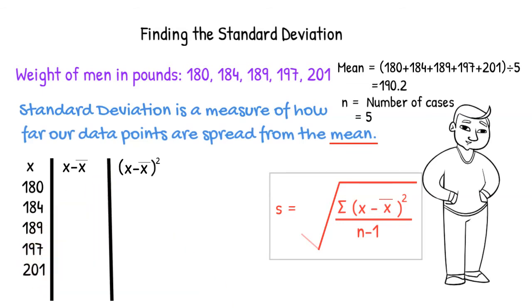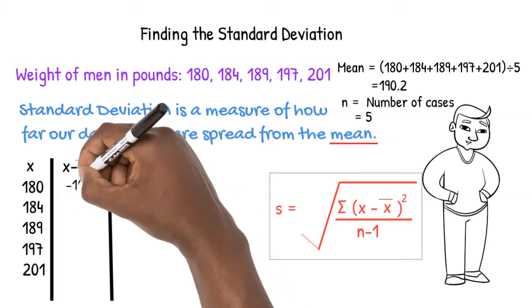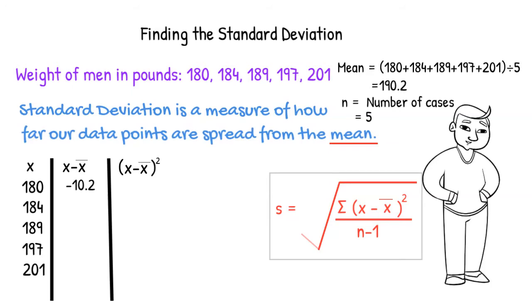180 minus the mean, 190.2, gives us negative 10.2. We square that value and get 104.04.